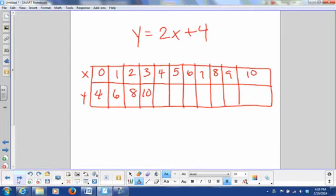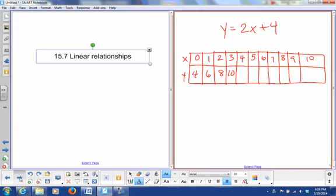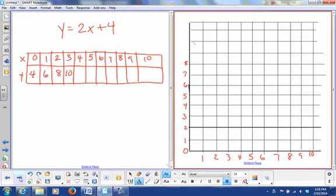Okay, so let's take a look. We've got this table here, and we've got y equals 2x plus 4. All right, so what I want to do is fill out the rest of the function table.